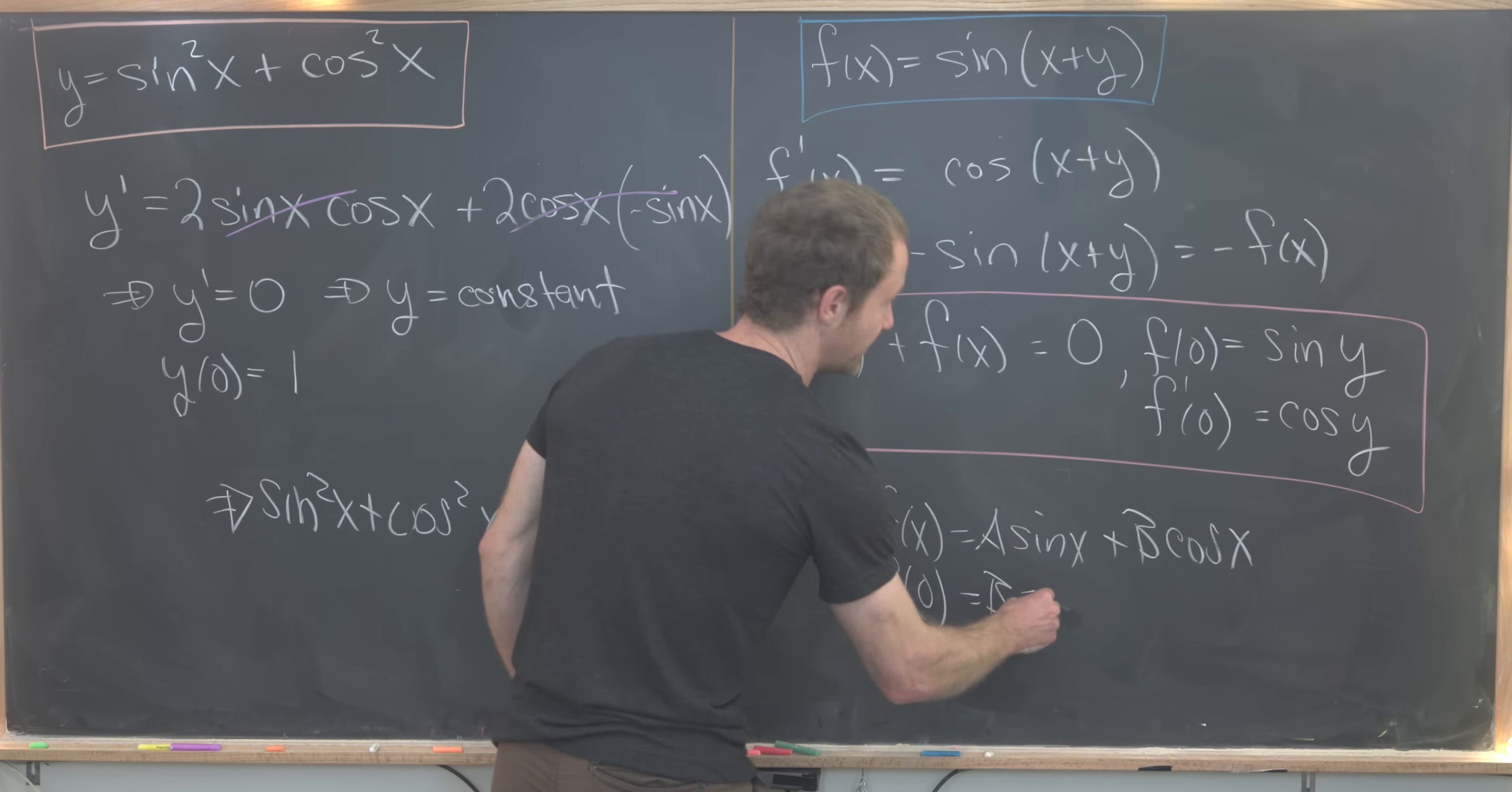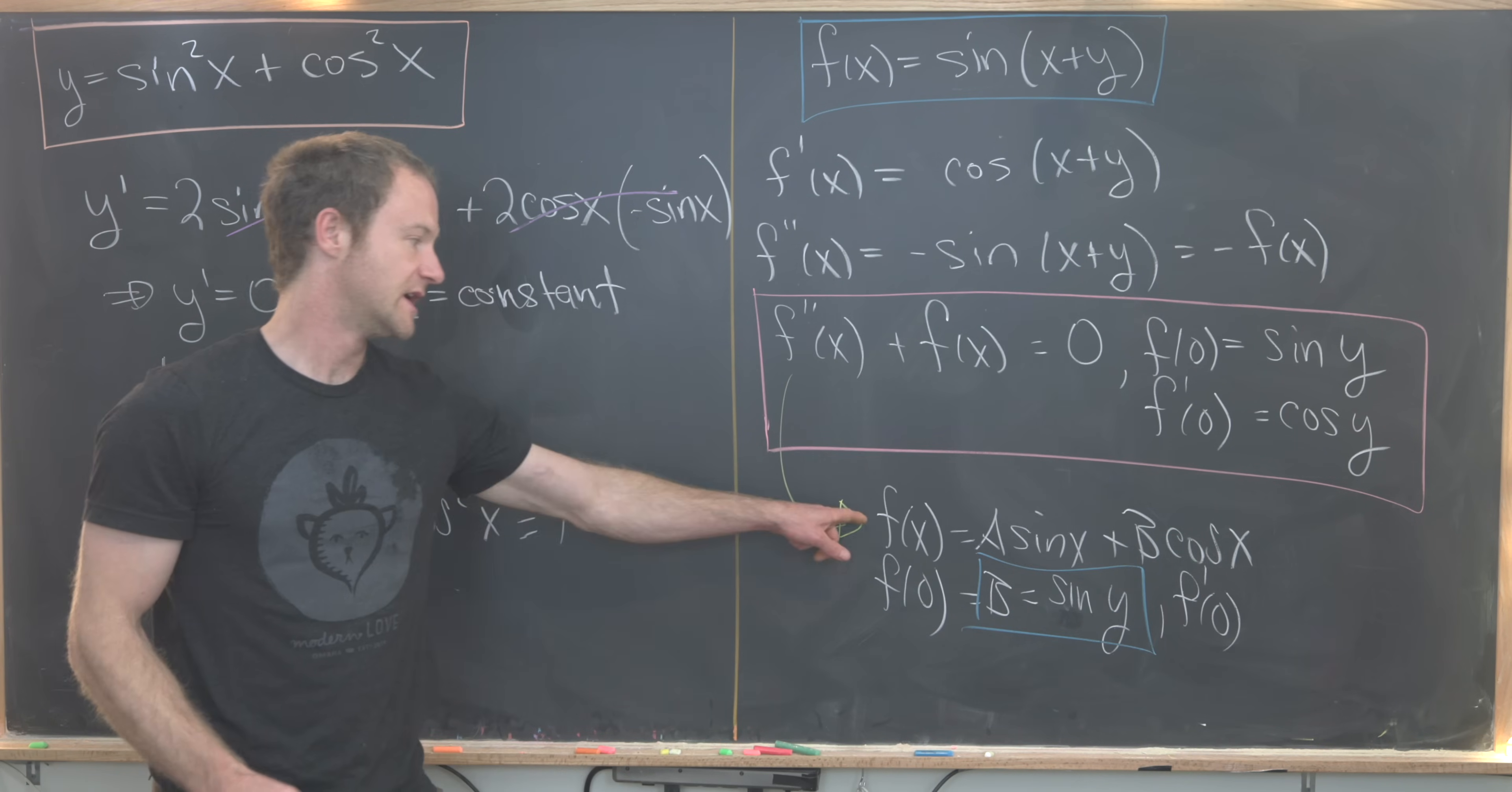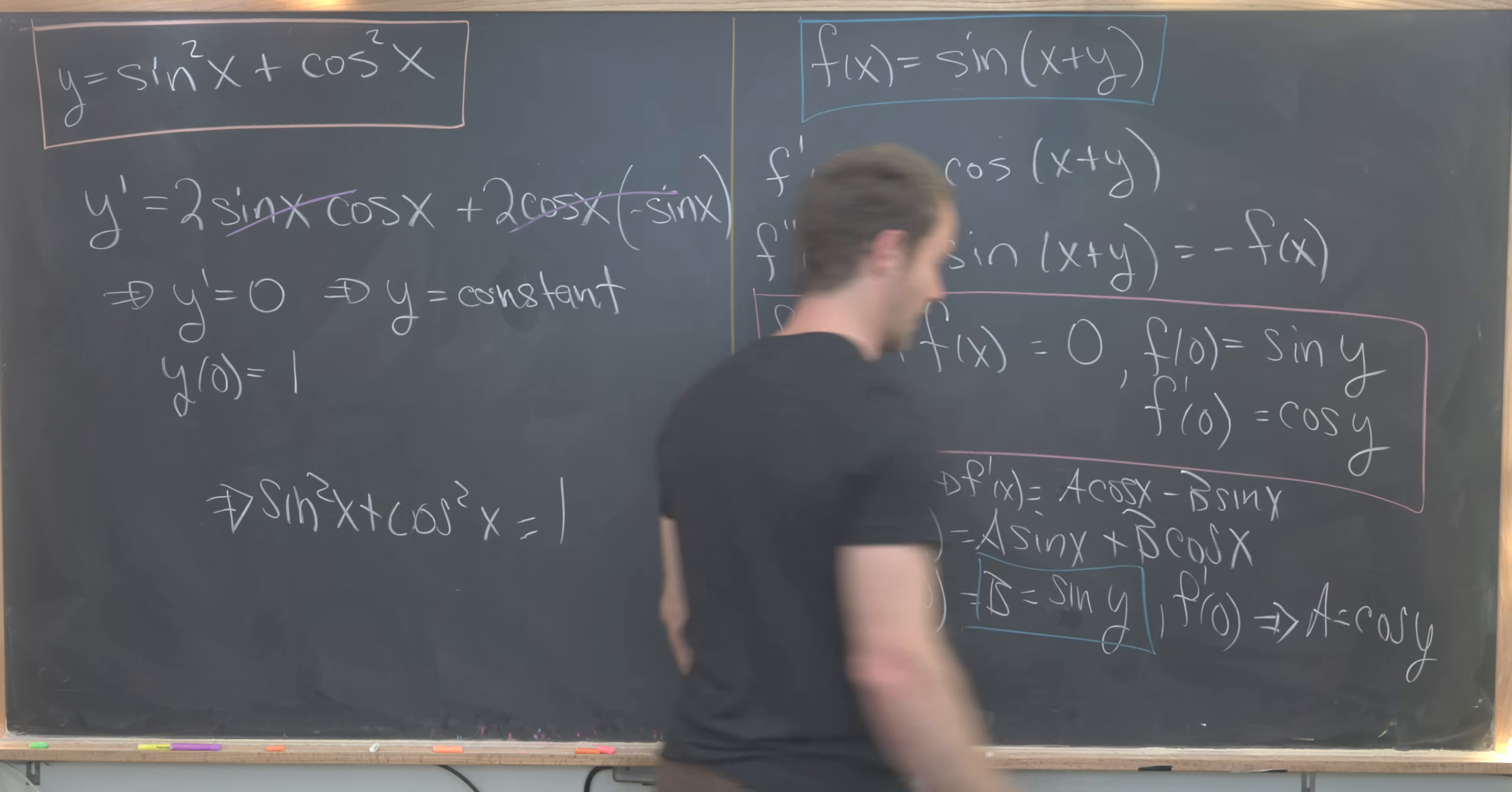We've taken care of that constant. Now similarly, if we evaluate f'(0)—taking the derivative here we get f'(x) = A cos(x) - B sin(x)—we'll see that means A = cos(y).